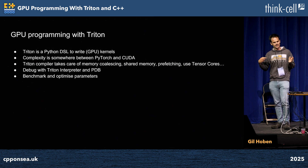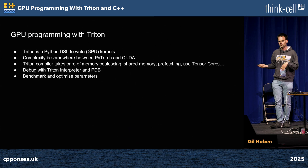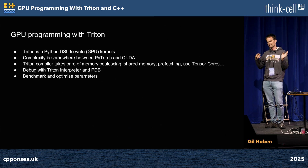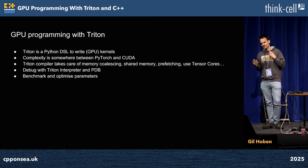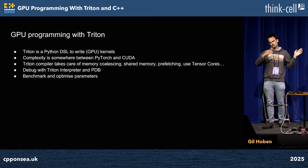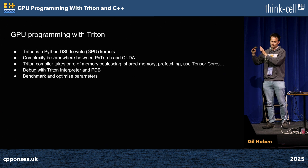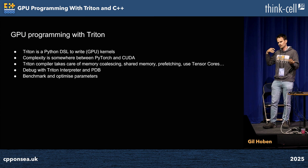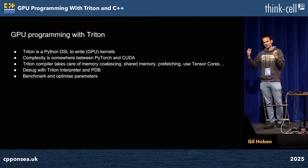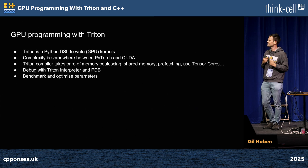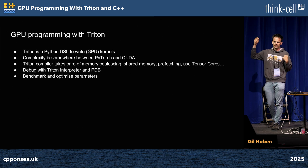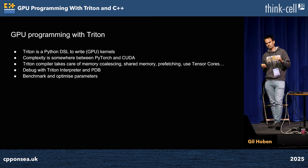Triton is a Python DSL that allows you to write kernels, usually for GPU. If you're familiar with PyTorch, it's meant to be a bit more complex than that but not as difficult as CUDA. There's a compiler that takes care of things like memory coalescing — ensuring sequential reads arrive together — it uses shared memory, prefetches data, and uses Tensor Cores, which are powerful units in NVIDIA GPUs that do very fast matrix multiplication. It also allows you to debug on the CPU using your Python debugger, and it optimizes certain launch parameters of your GPU kernel.